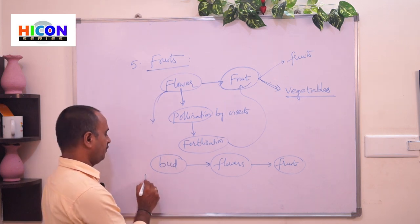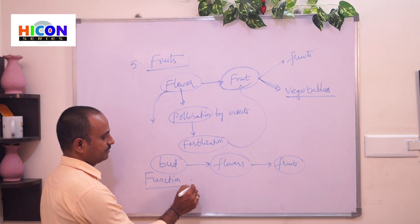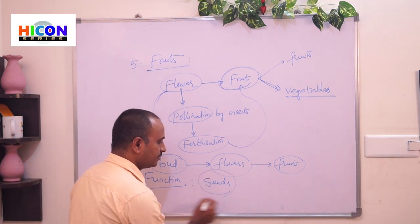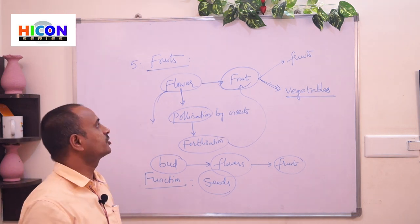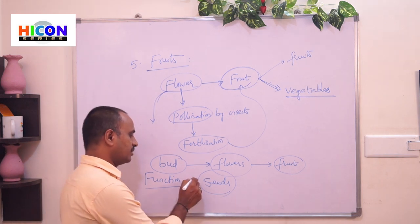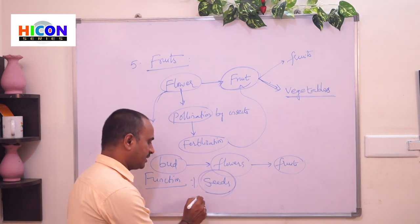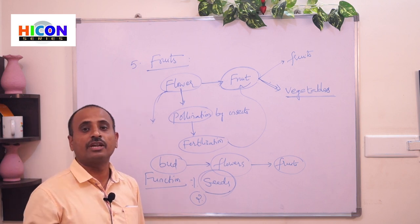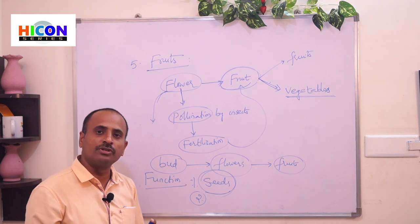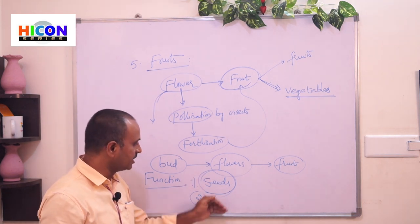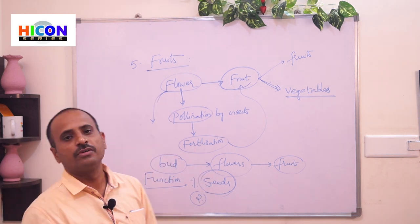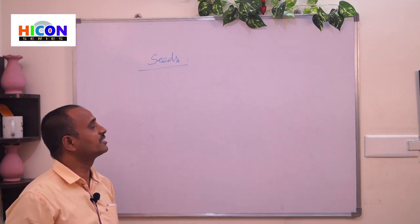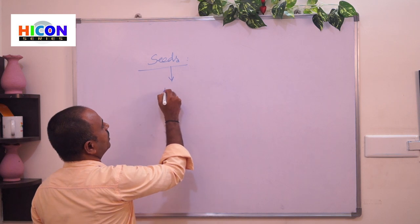The functions of fruits: first, fruits contain seeds, and new plants grow from these seeds. Second, these seeds grow up into a new plant — that is why fruits are very helpful in the reproduction of plants. The seeds come from fruits — some fruits contain only one seed and some contain many seeds.